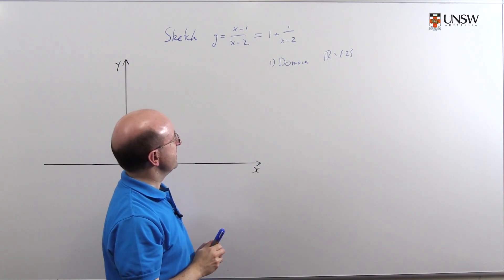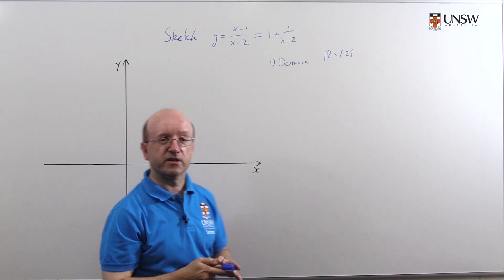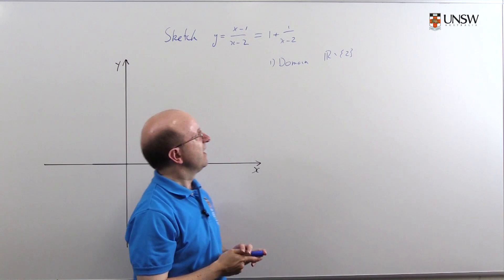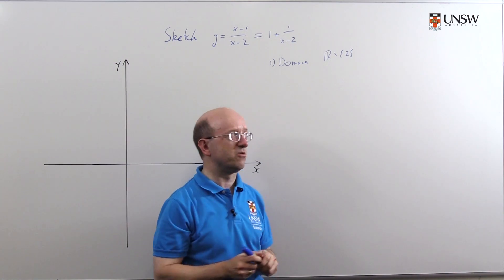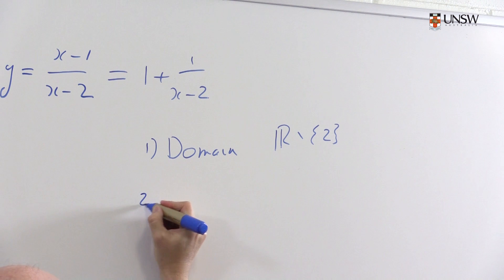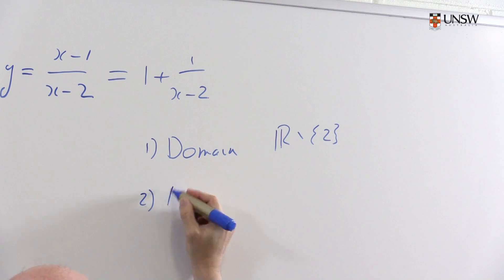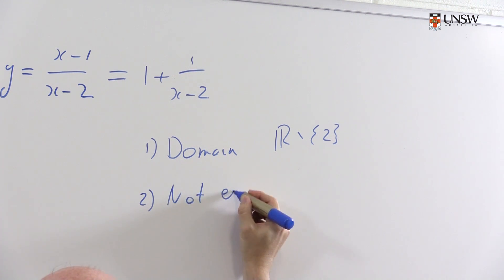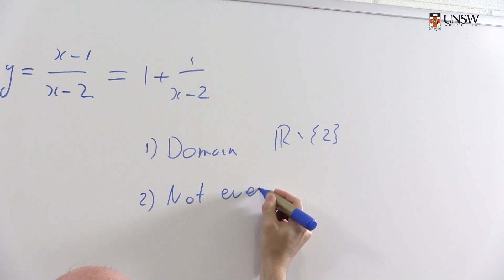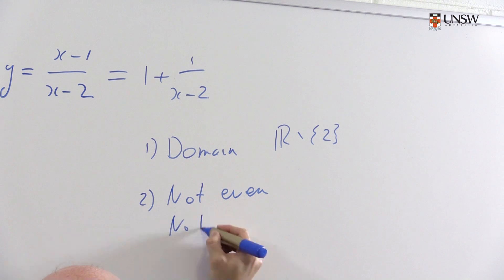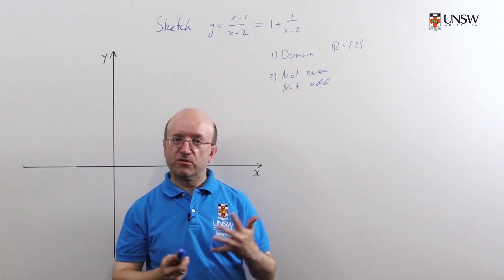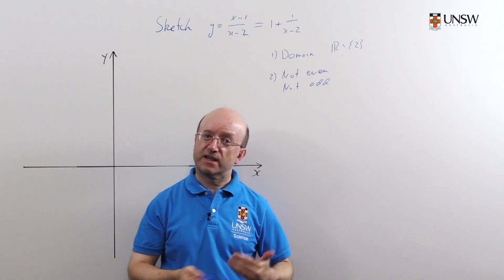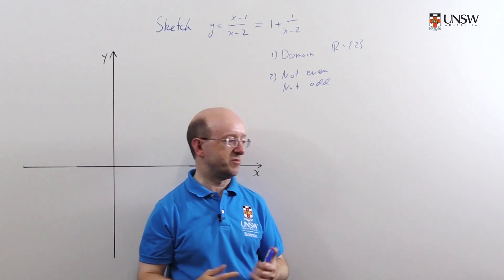The next thing we'd want to check is whether the function is even or odd. In this case the function is neither even nor odd. If it were even or odd, then we'd only have to draw half the graph and then just reflect it appropriately.